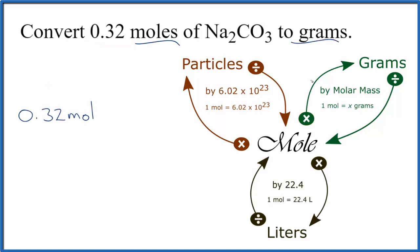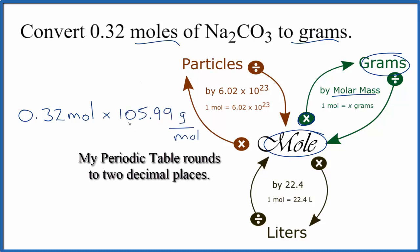from moles to grams. We multiply by the molar mass, and we find the molar mass by adding up the mass of each atom. For Na2CO3, the molar mass is 105.99 grams